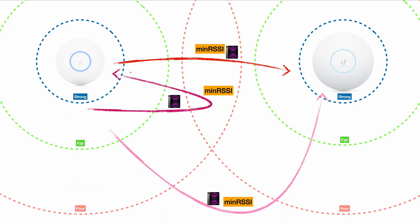We all know the longer the distance between your device and your access point, the weaker the signal. In this simple diagram I have three different dash lines to represent the strength of the signal. If you have two access points, you need to consider the roaming experience of your mobile device and set the minimum RSSI carefully. You may think you can calculate the overlapping of the two access points and choose an RSSI value in the middle, but what if the most likely moving path for your device is different? Do you really want your device to roam at that point?